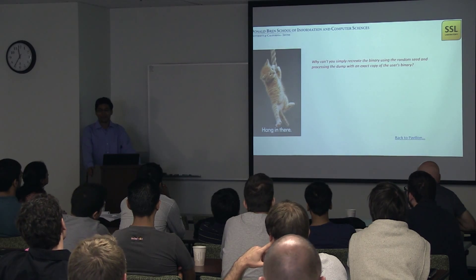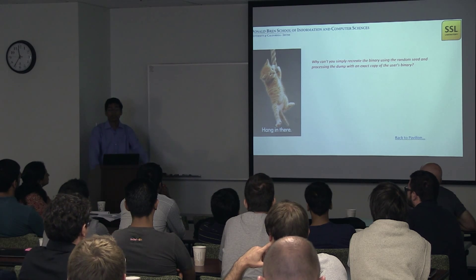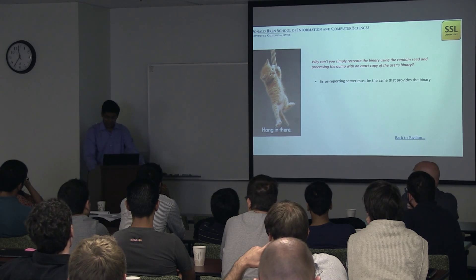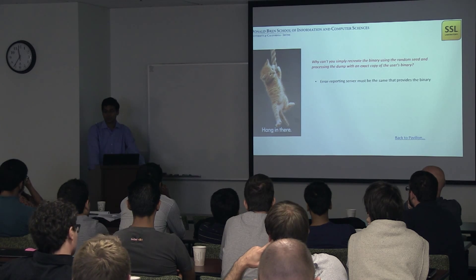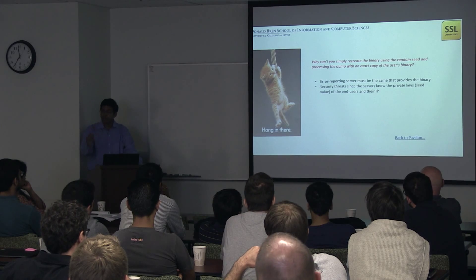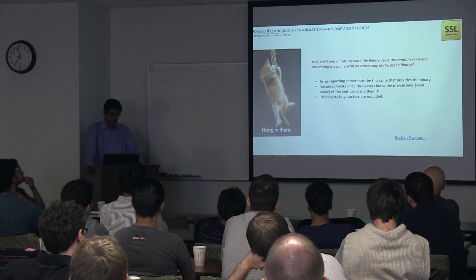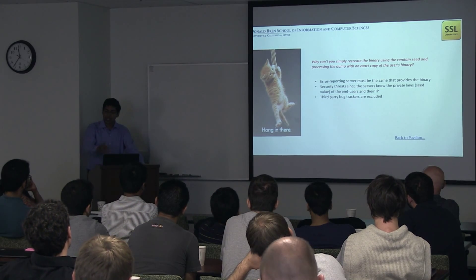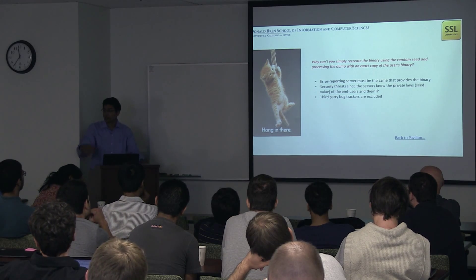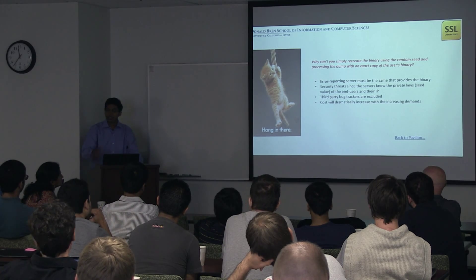A question you might be thinking: why can't you simply recreate the binary using the random seed and process it down as an exact copy of the user's binary? There are typically four answers. First, the error reporting server must be the same as that which created the binary — if you're talking about billions of users, you don't want just one server. Second, there are security threats because servers have private keys as well as user IPs. Third, and extremely important even in the open source world, third-party bug trackers are excluded because people in the open source world won't be able to debug the information. Fourth, cost will dramatically increase exponentially with each increasing demand.